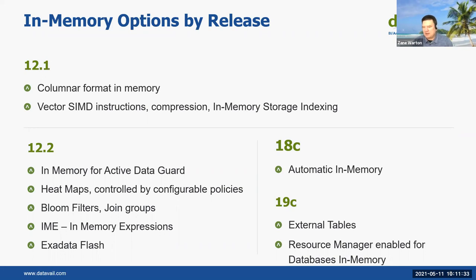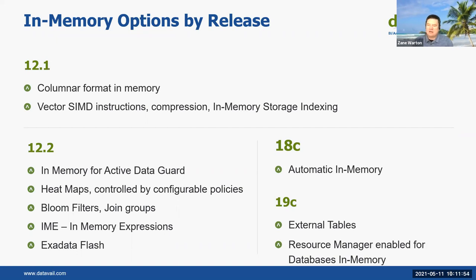If the sum of the space of segments enabled for In-Memory exceeds the available memory in the In-Memory column store, automatic In-Memory will kick in and help manage column store space using heat map statistics. It uses access tracking, column statistics, and other relevant statistics so that segments can be automatically evicted to make room for more active segments. In 19C, support was added for external tables — your table doesn't even have to be in your normal database; an external file can be turned into a column store. You can also use Resource Manager to help manage your processes and queries.